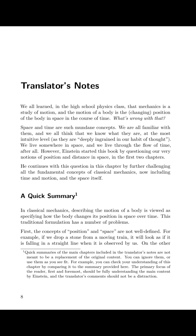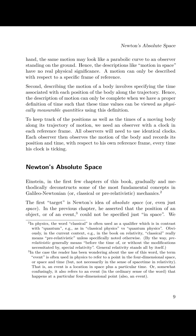A quick summary. In classical mechanics, describing the motion of a body is viewed as specifying how the body changes its position in space over time. This traditional formulation has a number of problems. First, the concepts of position and space are not well defined. For example, if we drop a stone from a moving train, it will look as if it is falling in a straight line when observed by us. On the other hand, the same motion may look like a parabolic curve to an observer standing on the ground. Hence, the descriptions like 'motion in space' have no real physical significance. A motion can only be described with respect to a specific frame of reference.